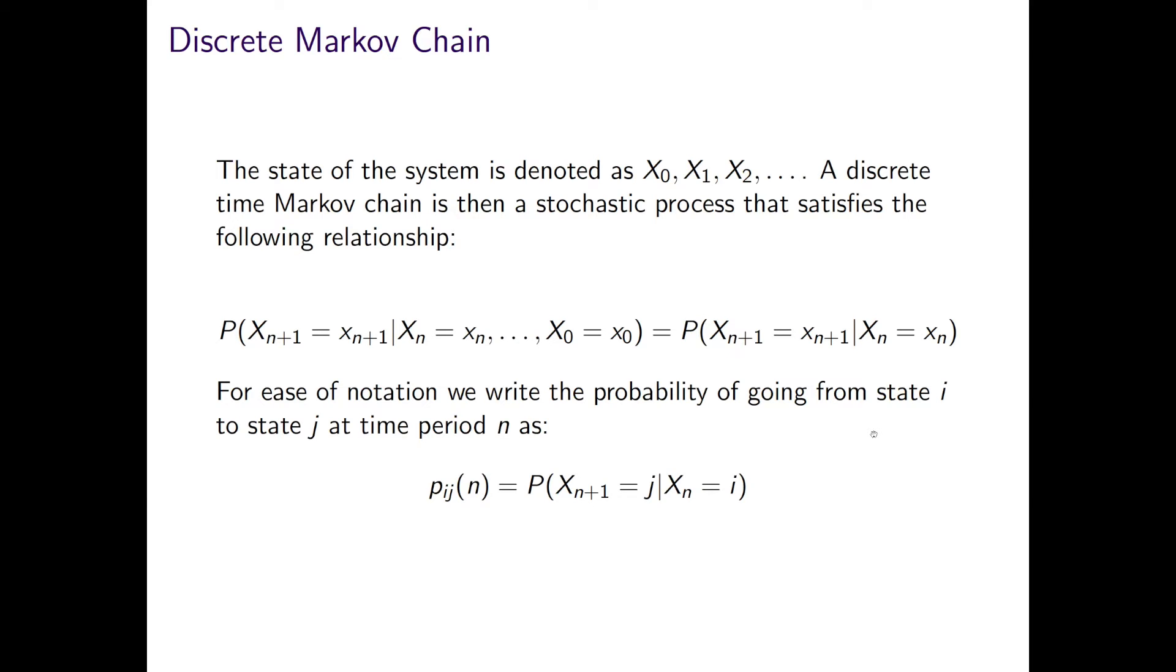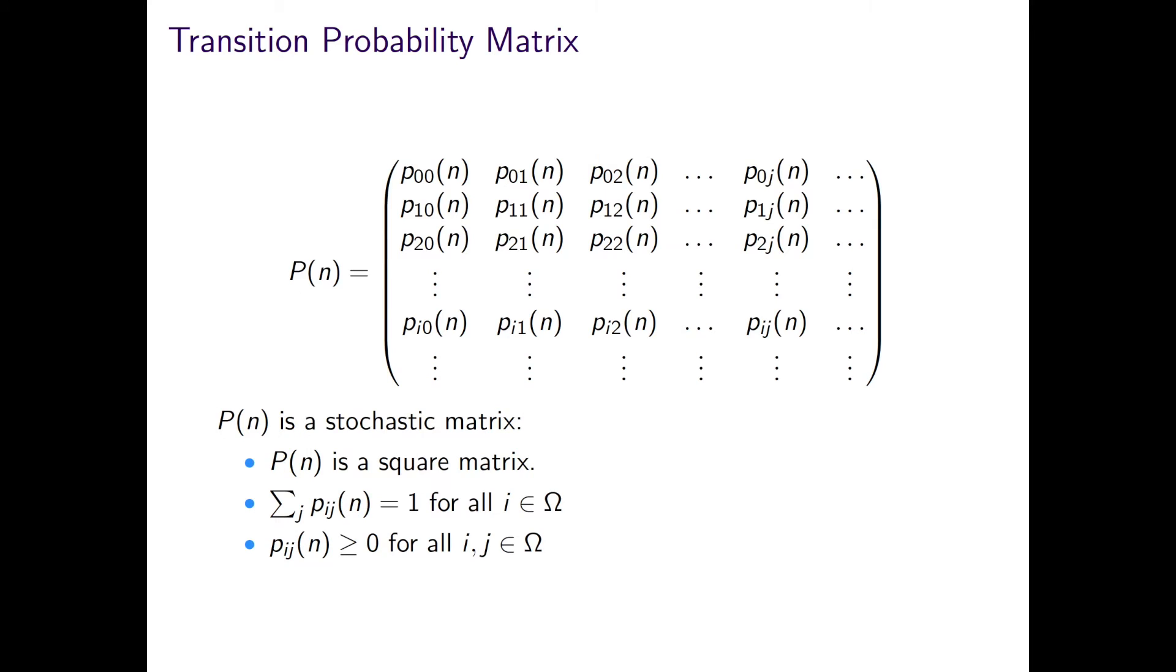And for ease of notation, we write the probability of going from state I to state J at time M as PIJN. This then leads on to the transition probability matrix of one-step-ahead probabilities. The first entry, for example, is the probability of being in state 0 and still being in state 0 at the next time point, whereas this is the probability of moving from state 0 to state 1, and so on. Clearly the rows must sum to one for all possible transitions of I over the state space.